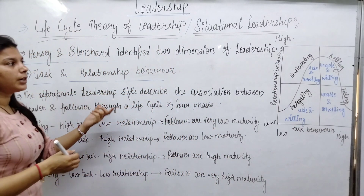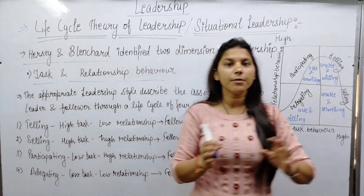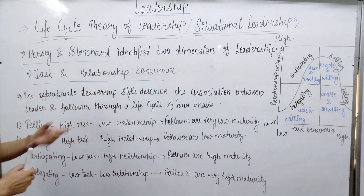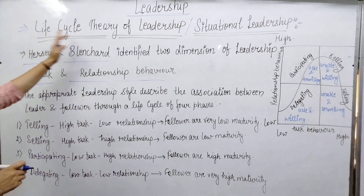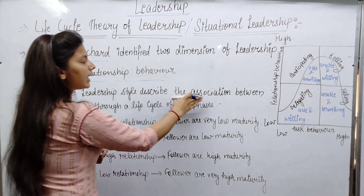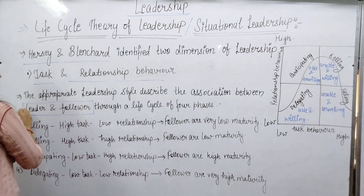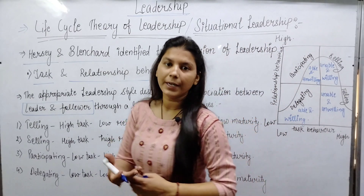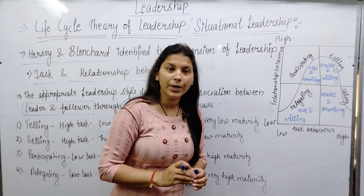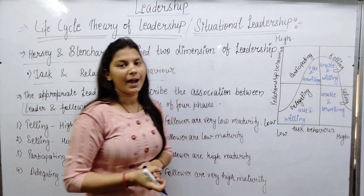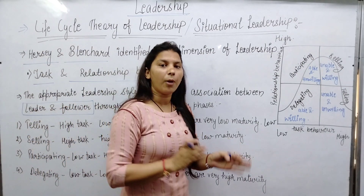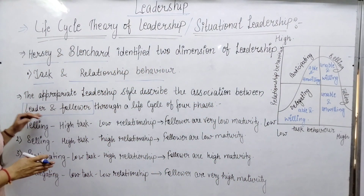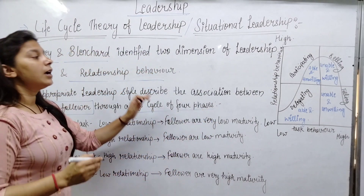In this theory, we discuss two things: who the followers are and which leadership style we should adopt for them. The Life Cycle Theory describes the association between leader and follower — in which stage, which leadership style is appropriate. This is a very easy and short theory. The leader and follower go through four phases.